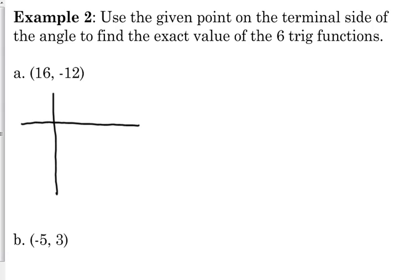Positive 16, negative 12 is in the fourth quadrant. So this is what it's talking about. It's saying here's your point that creates an angle, and really for our purposes it's going to create a right triangle, and this is how it works.